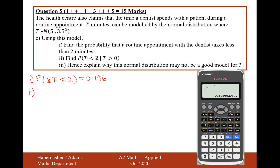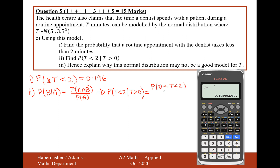Moving on to part B, find the probability that T is less than 2 given that T is greater than 0. Let's remind ourselves of the formula for conditional probability: P(B given A) equals P(A and B) over P(A). So it says that P(T < 2 | T > 0) equals the probability of the intersection — that the time is between 0 and 2 — over the probability that T is greater than 0. We need to work out both of these and then divide one by the other.